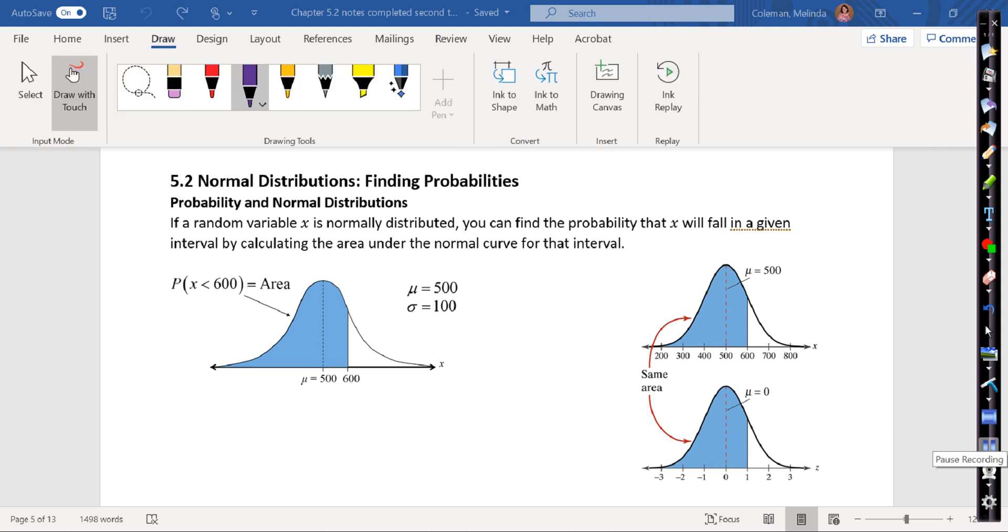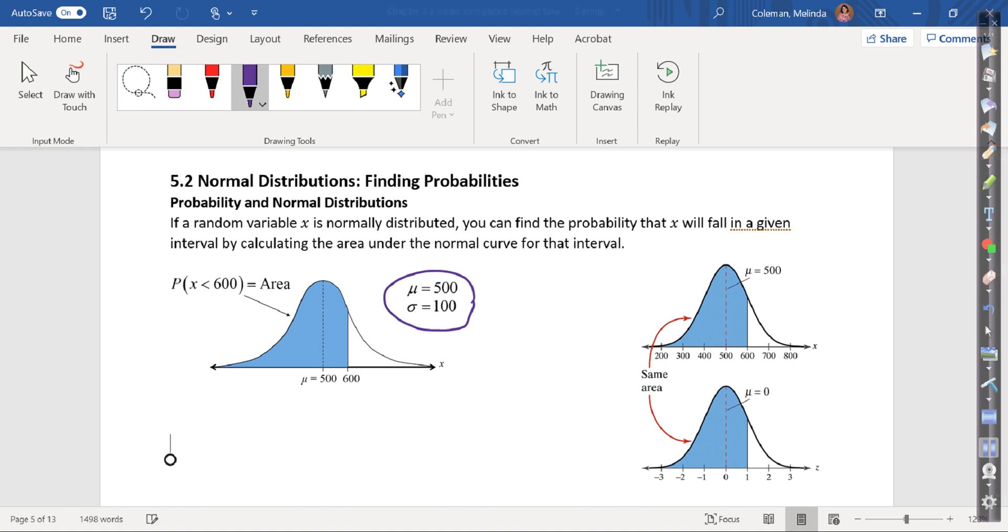All right, this next section somewhat combines what we just did in the previous section so you can see it all put together. Normal distributions - what we're doing is taking this mean of 500 and standard deviation of 100 and we're going to convert it into the standard normal. So we're going to convert it here where it has a mean of zero and a standard deviation of one.